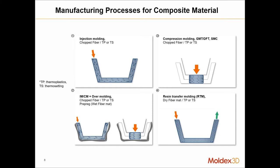Different types of manufacturing processes for these composite materials include, but are not limited to, injection molding — which typically uses short fibers — compression molding which uses SMC and GMT, injection compression molding, overmolding, and RTM-type processes.